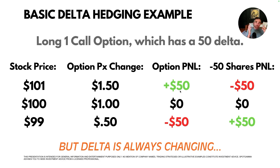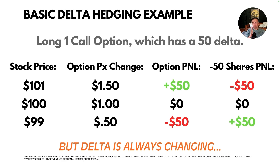Who would want to do this? The answer is volatility traders or market makers — groups that are collecting bid-ask spread. The key thing to note is that this option has a 50 Delta right now, but as soon as time changes or implied volatility shifts, your Delta is changing as well.